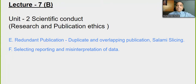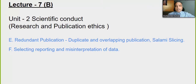This is Lecture 7b. We have been talking about Unit 2, and this is on scientific conduct — redundant publication, selective reporting, and misinterpretation of data. After this, the next lecture would be the eighth lecture, and that would be Unit 3.